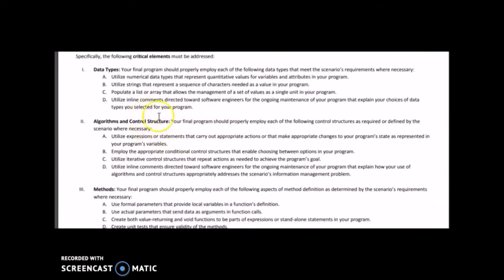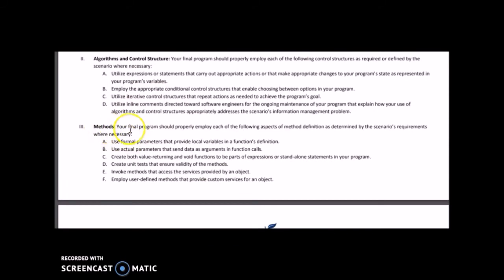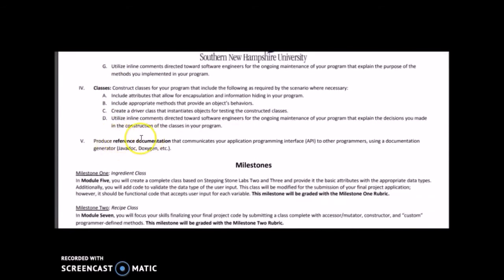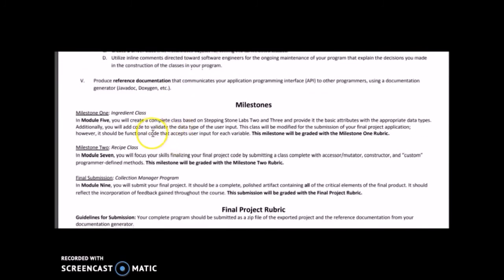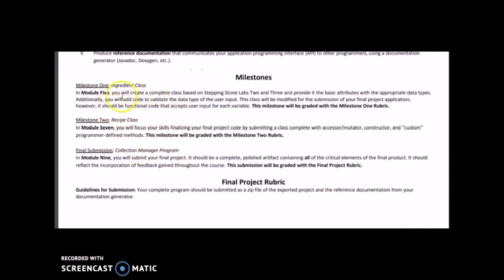Make sure you've covered all of these critical elements: data types, algorithm control structures, methods, classes, and reference documentation using JavaDoc. Read through all of these and make sure they're covered. Milestone one was the ingredient class, milestone two was the recipe class, and now for the final submission we're polishing all of these different classes and making sure everything connects, including a driver class to actually run the program — connecting all the dots for the final project submission.